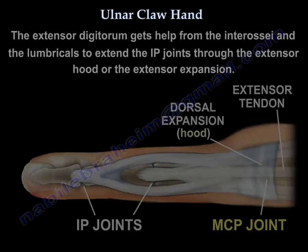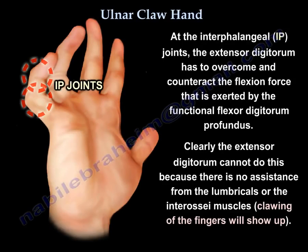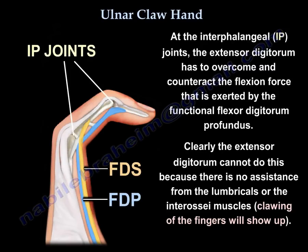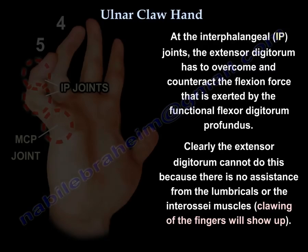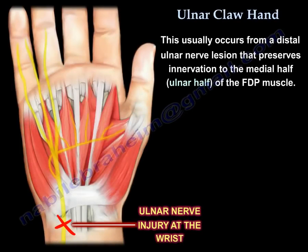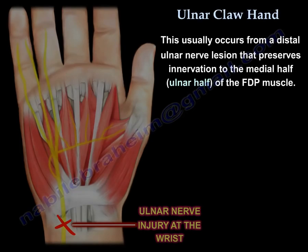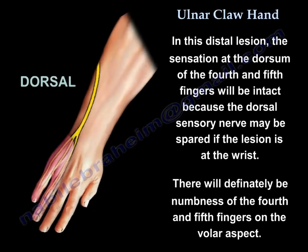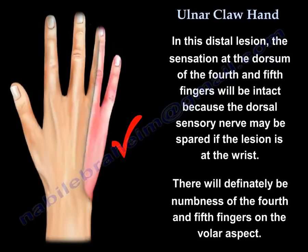At the interphalangeal joints, the extensor digitorum has to overcome and counteract the flexion force exerted by the functional flexor digitorum profundus. The extensor digitorum cannot do this because there is no assistance from the lumbricals or interossei, and clawing of the fingers shows up. This is usually a distal lesion that preserves innervation to the medial or ulnar half of the profundus muscle. In these distal lesions, the sensation at the dorsum of fingers four and five may be intact because the dorsal sensory nerve may be spared if the lesion is at the wrist.